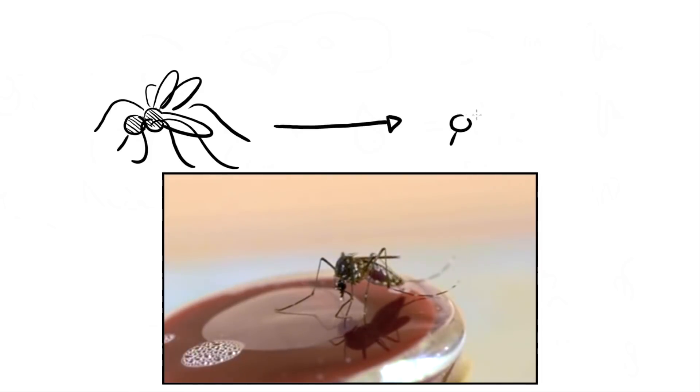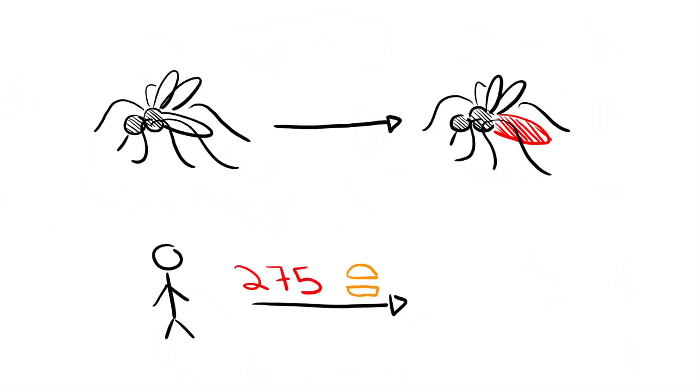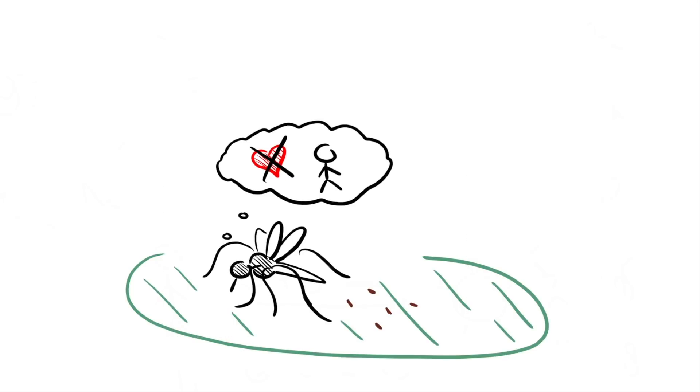A proper meal of blood doubles her body weight. That's like eating 275 cheeseburgers in one go. In the few days after her tasty meal, she stops looking for her next human victim and goes into seclusion to mature her eggs before laying them in stagnant water.